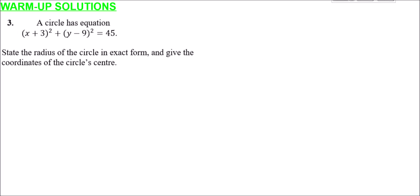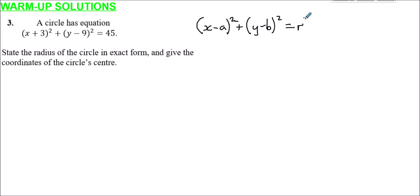Question three: a circle has equation (x + 3)² + (y - 9)² = 45. We need to state the radius in exact form and give the coordinates of the circle's center. Recalling the standard form from last time: (x - a)² + (y - b)² = r², where r is the radius and the center is (a, b).